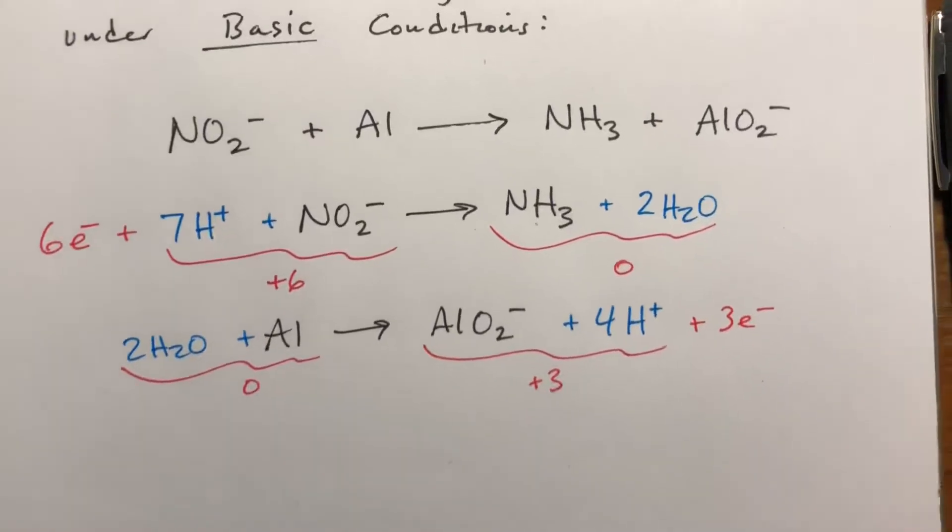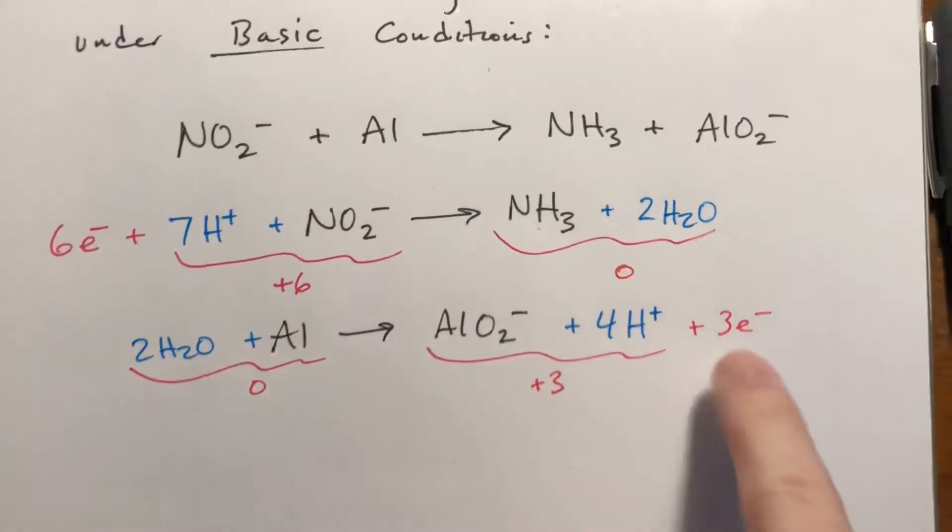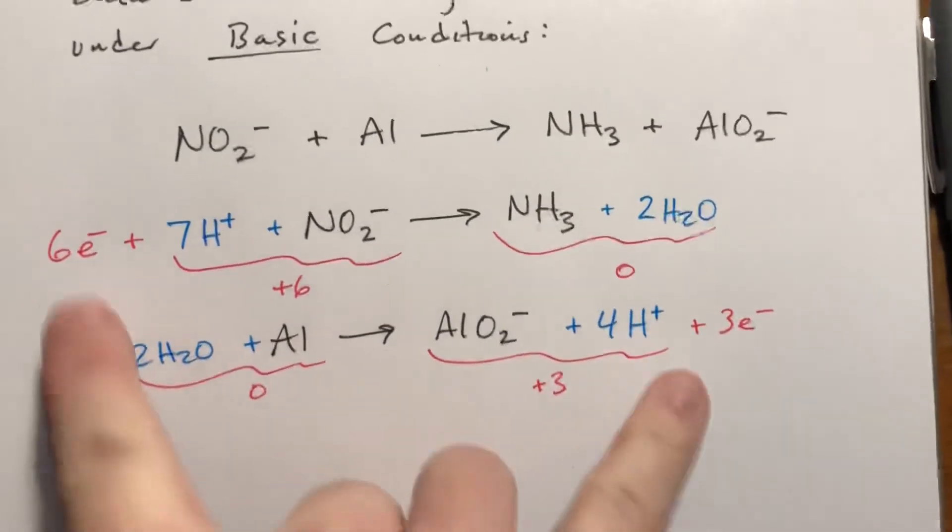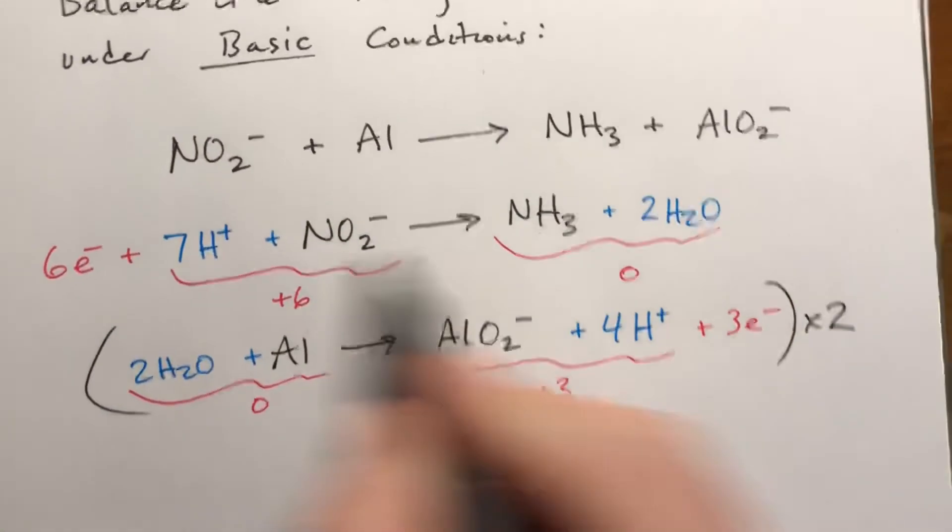Okay, to get everything to cancel out, we will need to double this second reaction, because this has three electrons, this has six. If you double this, that would be six and six, they will cancel out. So we're gonna have to double the entire second reaction, but we don't have to change the first one.